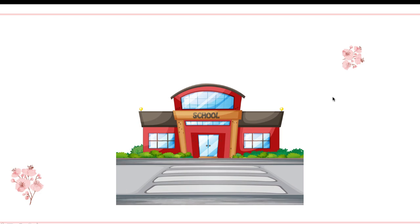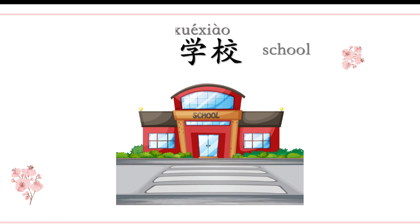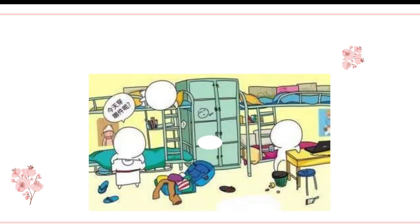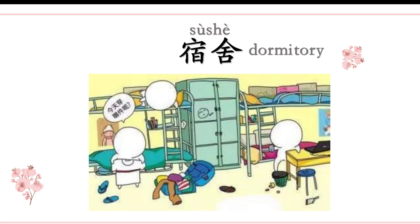The second word: 学校. 这是学校. We've learned: 去学校, 回学校. And 学校里有没有宿舍? 宿舍 means dormitory. In one dormitory room there are maybe four students — it's a small dormitory.